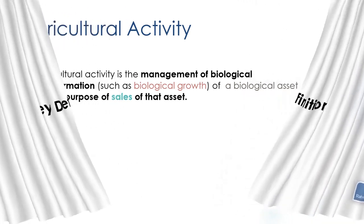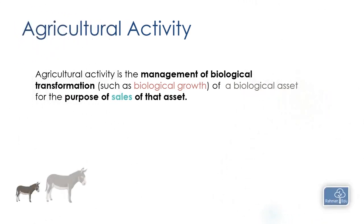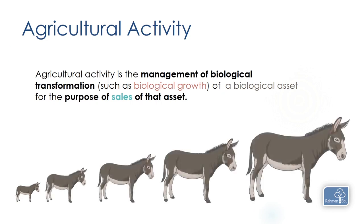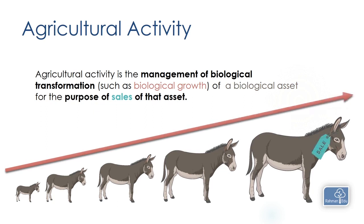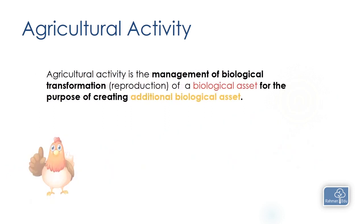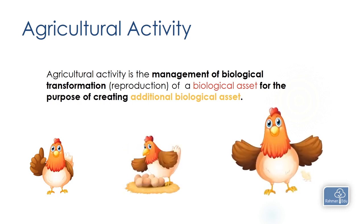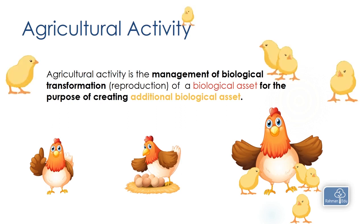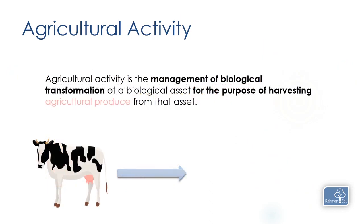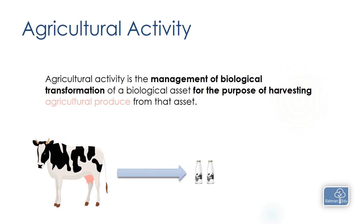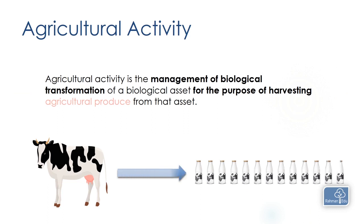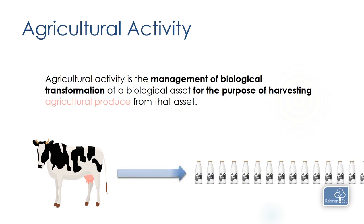First off, let's talk about some of the key definitions. We need to know what is agricultural activity. Agricultural activity is the management of biological transformation of a biological asset, maybe for the purpose of sale of that particular asset, or for the purpose of creating additional biological assets, or for the purpose of harvesting agricultural produce from that asset.